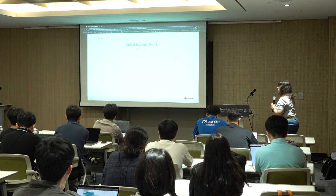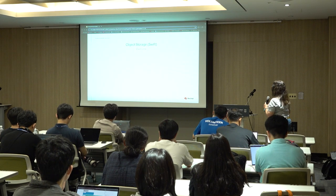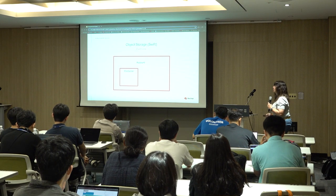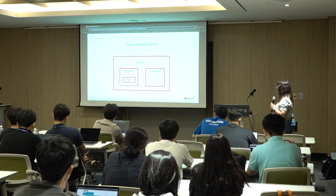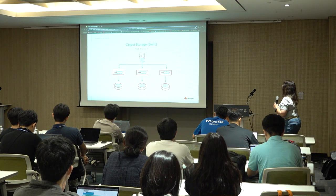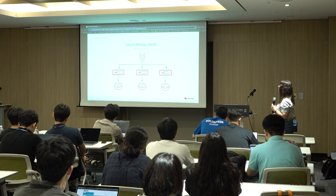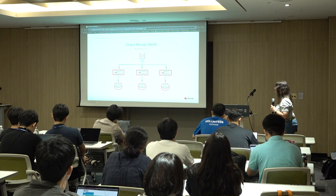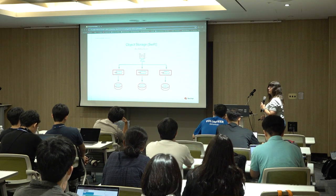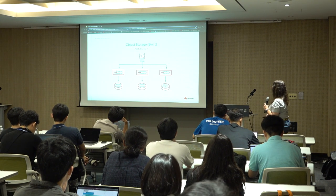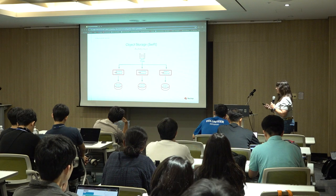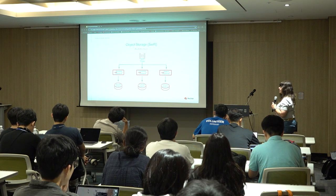Swift is the object storage — as I mentioned, it was one of the first two projects. You have your account, and within your account you have containers. Your container can have one object or multiple objects. Looking at the Swift architecture, you have Swift Proxy — that is the name of the API. Swift can also be run solo; you do not have to run it with the full OpenStack cluster. You have an account backend, container backend, and object backend, and each one has a database as well.